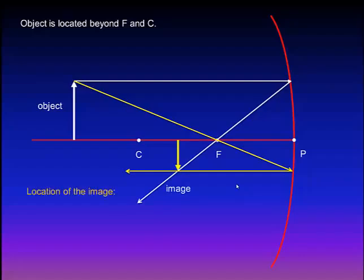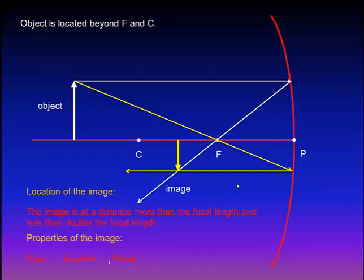As you can see, the location of the image is at a distance more than the focal length and less than double the focal length. The properties of the image formed are: real, which means we can receive it on a screen; inverted; and small or minimized, because it appears smaller than the object.